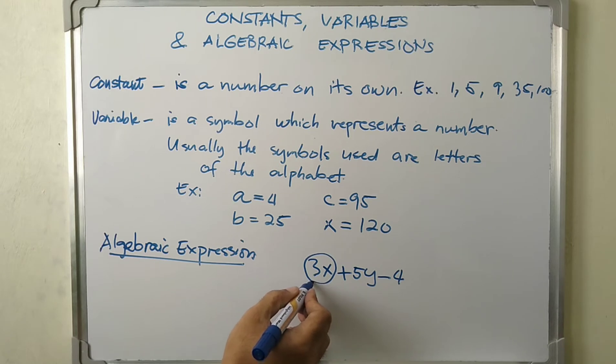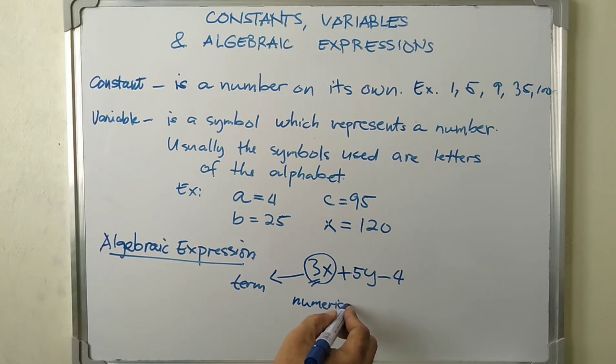This one is called term, and we have 3 terms. In each term, the number is numerical coefficient. It is a number to the left of the variable. And to the right of the numerical coefficient is called literal coefficient.